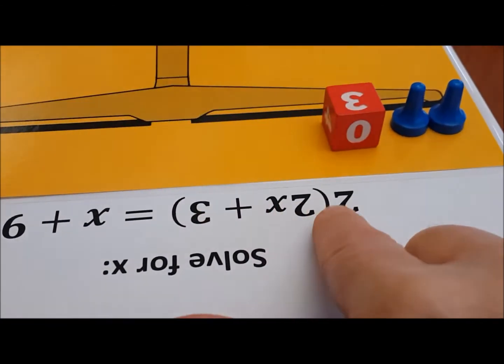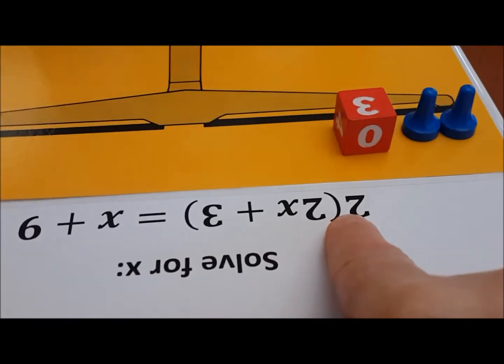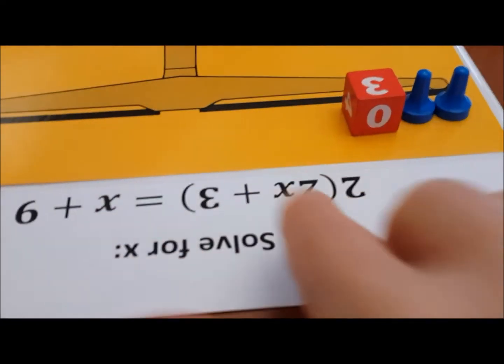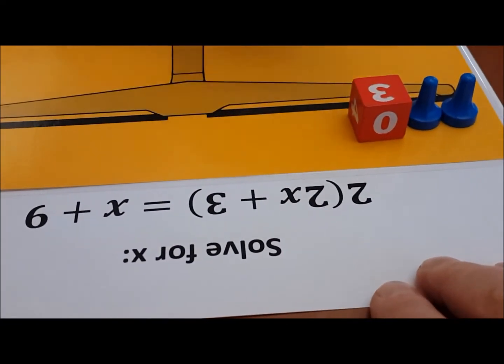And now, what does this 2 outside the parentheses tell you? I'm going to do it again. Do it again. Do it one more time. Same thing, one more time. 2x plus 3.